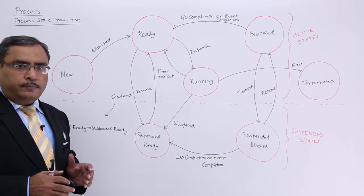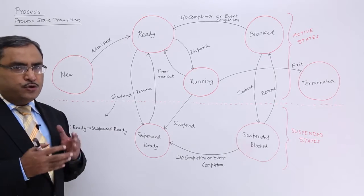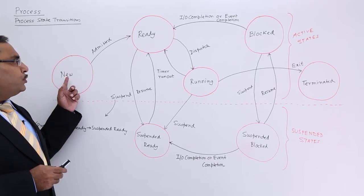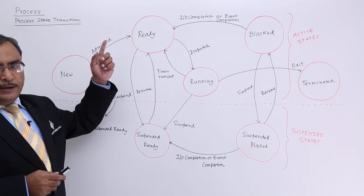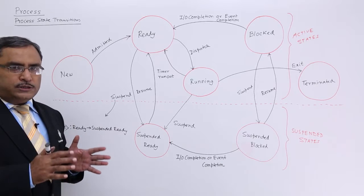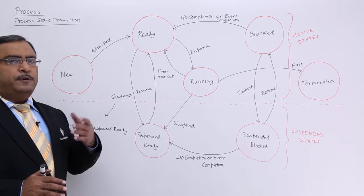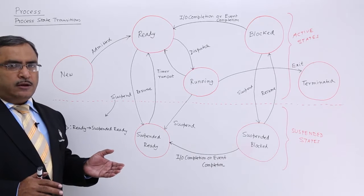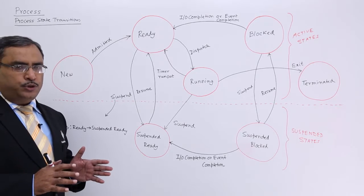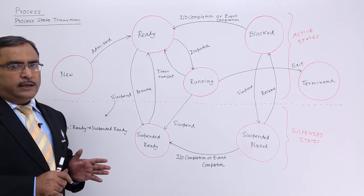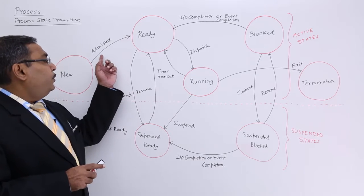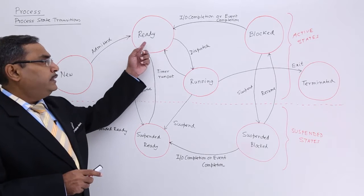Whenever a process gets birth — that means when the process is a new process — it will be found in the state 'new'. Then the process will move to the ready state. The ready state means the process will find itself in a ready queue where it will be waiting for execution. When the process gets admitted, it will be found in the ready queue.